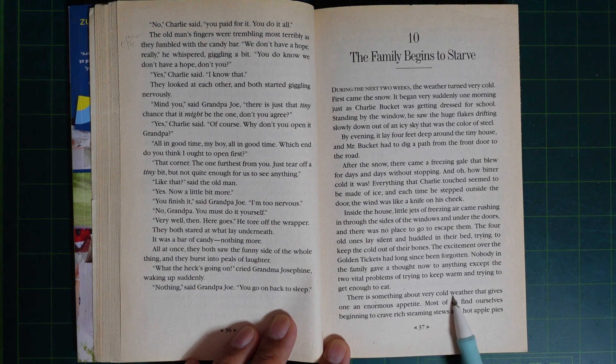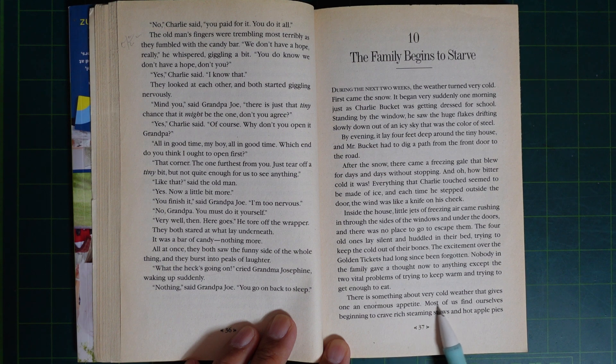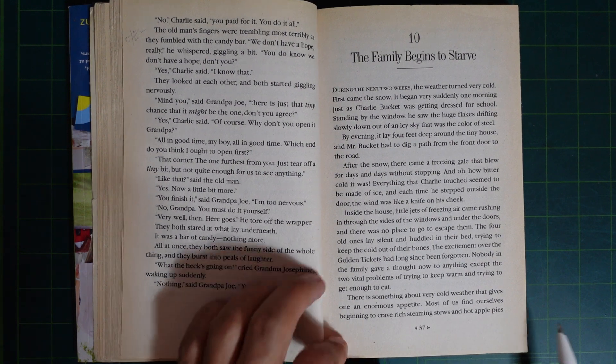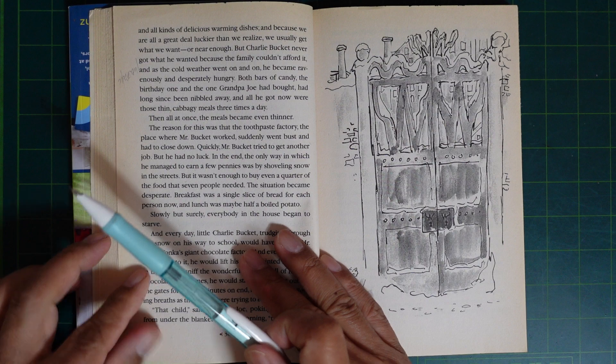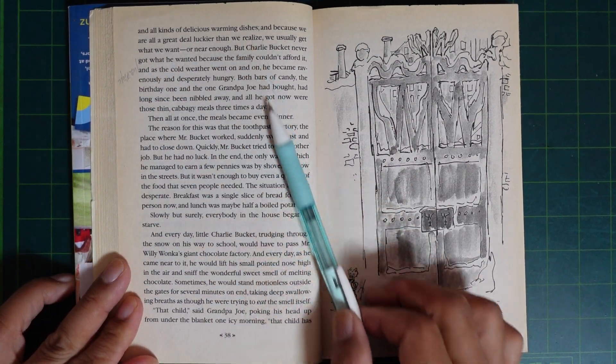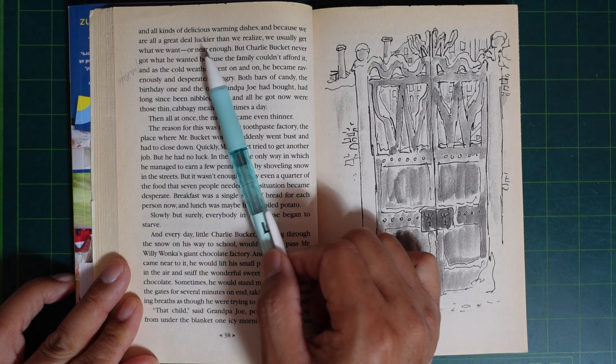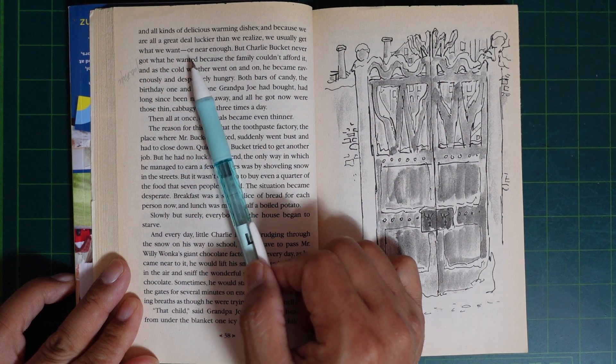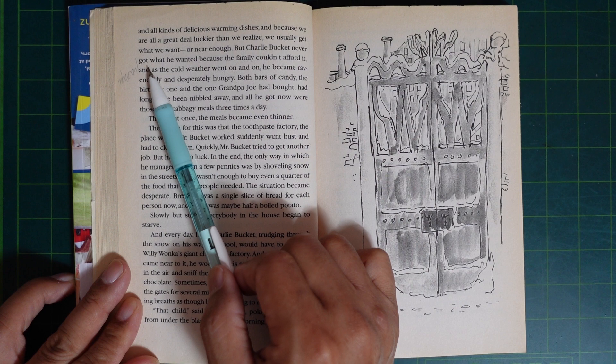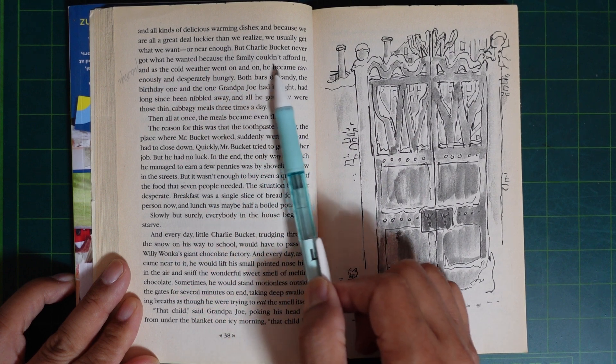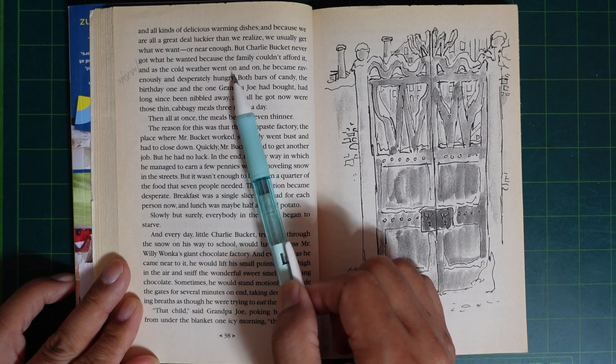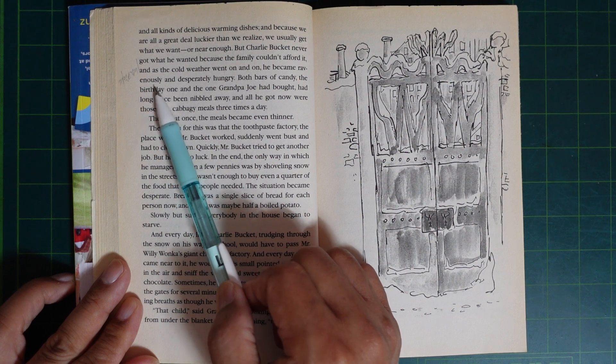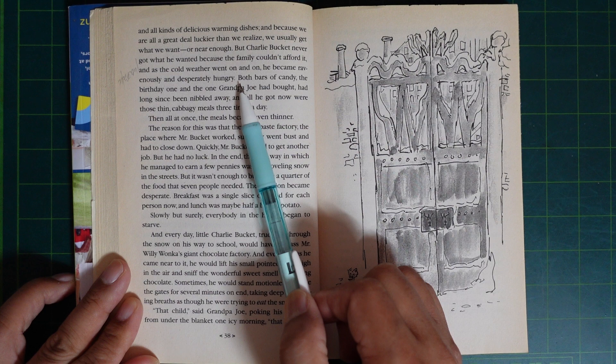There is something about very cold weather that gives one an enormous appetite. Most of us find ourselves beginning to crave rich hot soup, hot stew, and hot apple pies, and all kinds of delicious warming dishes. And because we are all a great deal luckier than we realize, we usually get what we want or near enough. But Charlie Bucket never got what he wanted because the family couldn't afford it. And as the cold weather went on and on, he became ravenously and desperately hungry.